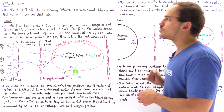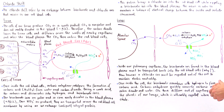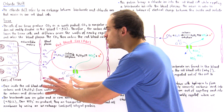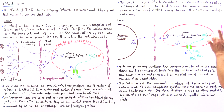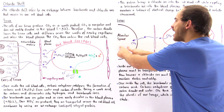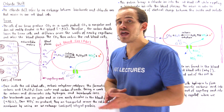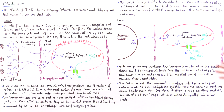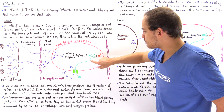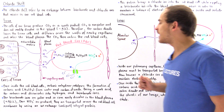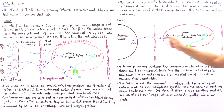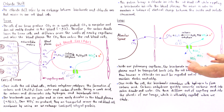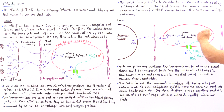Inside the lungs, the chloride shift also takes place, but in the opposite direction. The purpose in the tissues was to take CO₂ into the red blood cells, but in the lungs the purpose is to take CO₂ from the red blood cell and bring it into the alveolar space, which ultimately expels it during exhalation. The bicarbonate ion enters the blood plasma and travels to the pulmonary capillaries, where the opposite process takes place.